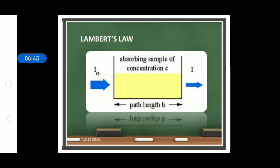As shown in the diagram, path length b — if increased — causes more light to be absorbed by the solution. Reducing this path length reduces the amount of light absorbed.